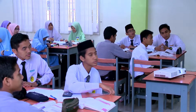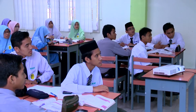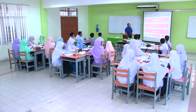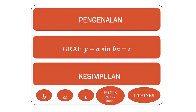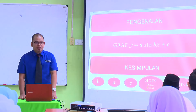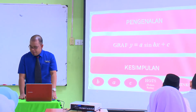Berdasarkan aktiviti yang telah dijalankan sebelum ini, persamaan sinus boleh ditulis sebagai Y sama dengan A sin BX tambah C. Kita akan kaji satu persatu. Apakah nilai yang diwakili oleh angkubah-angkubah tersebut? Huruf A di hadapan mewakili amplitude, cikgu. A mewakili amplitude — tinggi dan rendah.